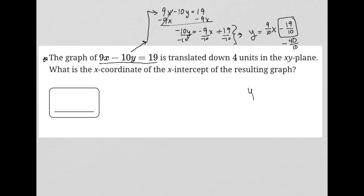So my new equation would be y equals 9/10 x. Again, when we translate a graph, the slope does not change. And then minus 59/10. So that's my graph translated down those four units.